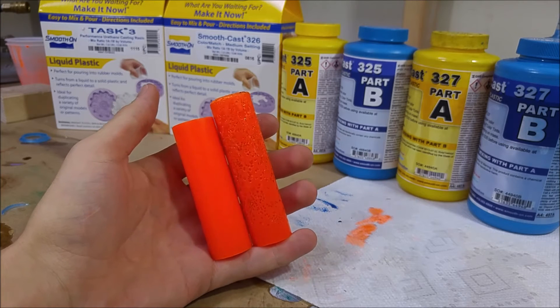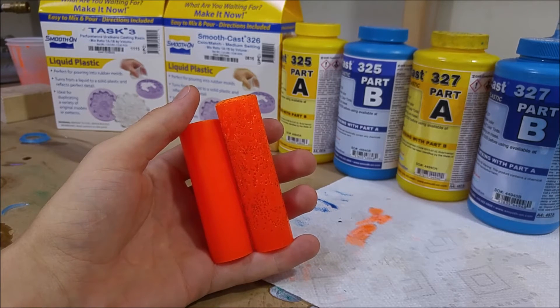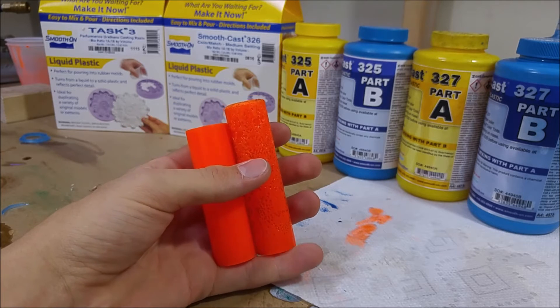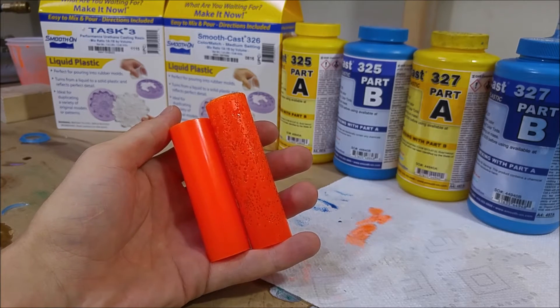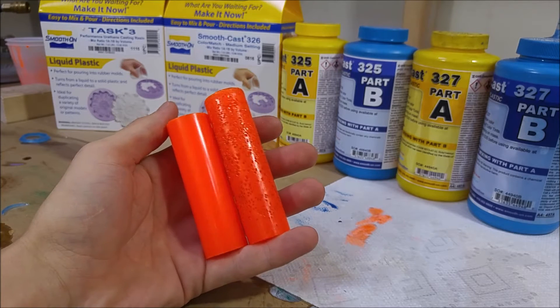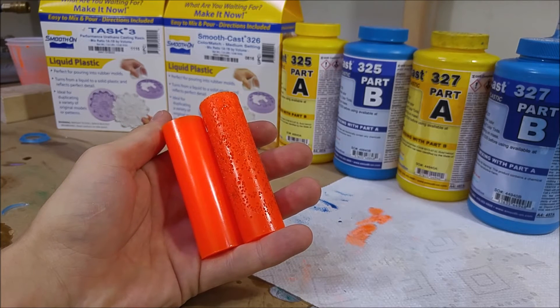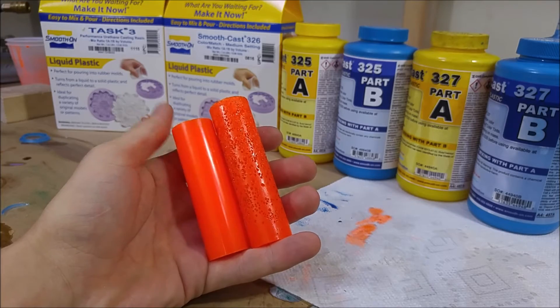And the thing with urethane is that as it cures, it slightly off-gases. And in that off-gassing, what that means is that there's some gases created during the curing process, and those gases tend to expand and create bubbles inside of the plastic.